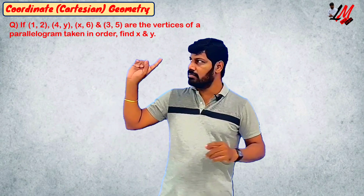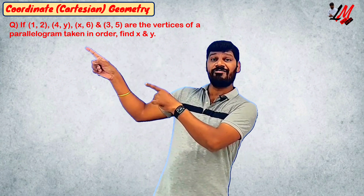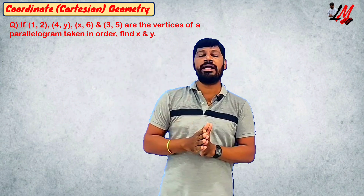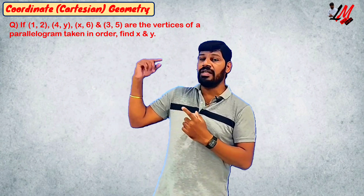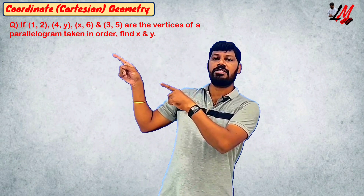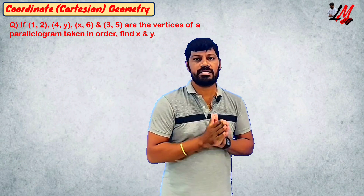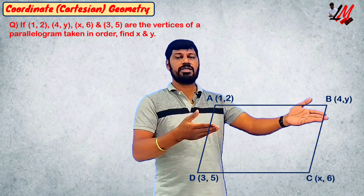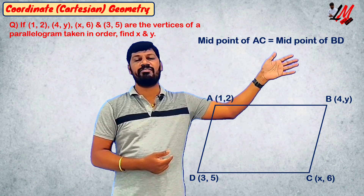We also have one more problem. Just have a look at this question. If you choose four points, they are clearly the vertices of a parallelogram. If you observe the points, some have missing x-coordinates or y-coordinates — there are two variables among the adjacent vertices. Since ABCD is a parallelogram, midpoint of AC equals midpoint of BD.